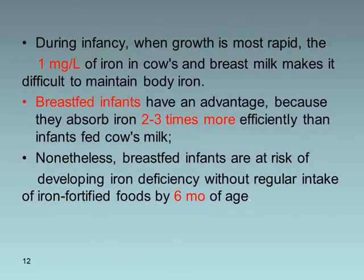During infancy, when growth is rapid, the one milligram of iron per liter in both cow's milk and breast milk makes it difficult to maintain body iron. Importantly, iron in breast milk is absorbed two to three times more efficiently than iron in cow's milk. Nonetheless, breastfed infants are at risk of developing iron deficiency anemia without regular intake of iron-fortified food by six months of age.